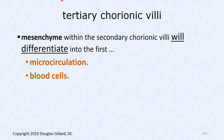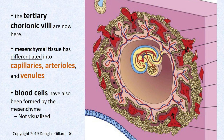When that mesenchyme differentiates into arteries, veins, and capillaries, they become tertiary chorionic villi. The microcirculation is born, along with early blood cells, formed from this amazing mesenchymal tissue. This circulation eventually hooks up to the heart. It starts as a microcirculation but becomes quite extensive.